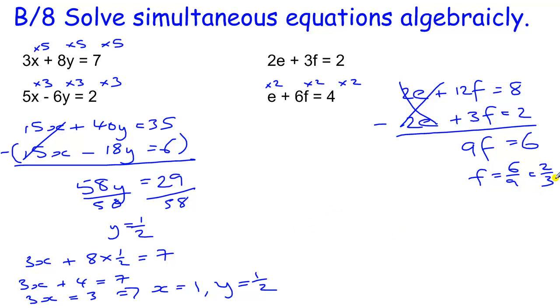And again I am going to use that value in this top equation. 2e plus 3 lots of 2 thirds equals 2. So 2e plus 3 lots of 2 thirds, well these 3's cancel, because I am timesing by 3 and dividing by 3 to leave me with 2 equals 2. So 2e equals 0 which implies e equals 0, and the other part was f equals 2 thirds.